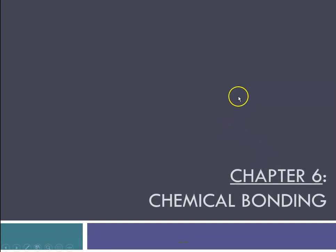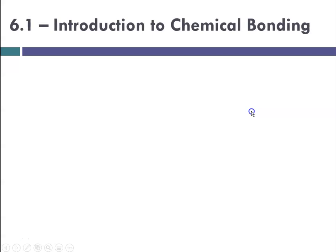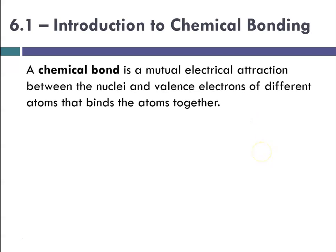Hello, this is Ms. Augustine, and today we are going to begin chapter 6, which is about chemical bonding. A chemical bond is defined as that mutual electrical attraction between the nuclei and valence electrons of different atoms that tends to bind the atoms together.